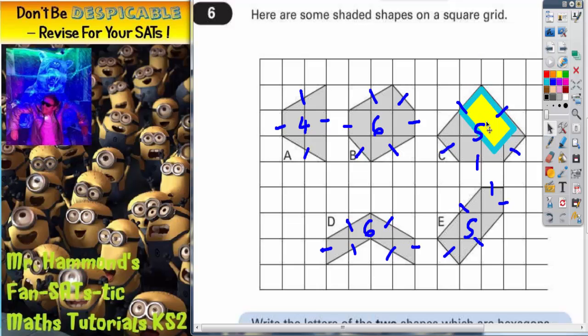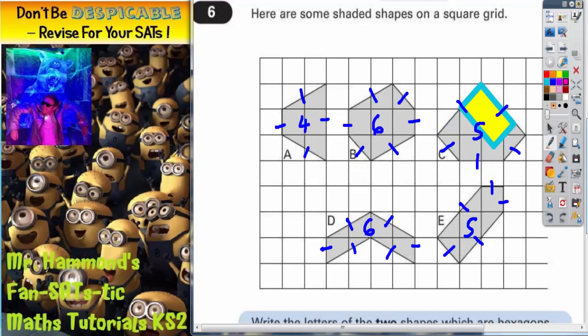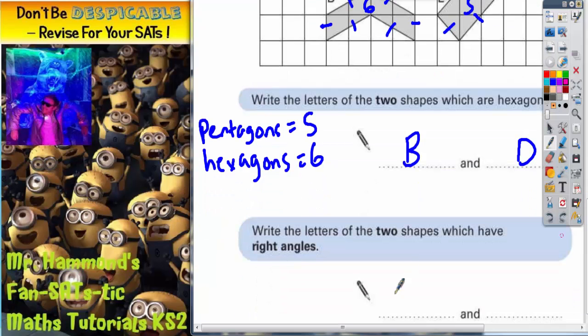So shape C does have a right angle in that corner there. It's also got another right angle in this corner and another right angle in this corner here. So actually, shape C has lots of right angles, so that's definitely going to be one of my shapes.